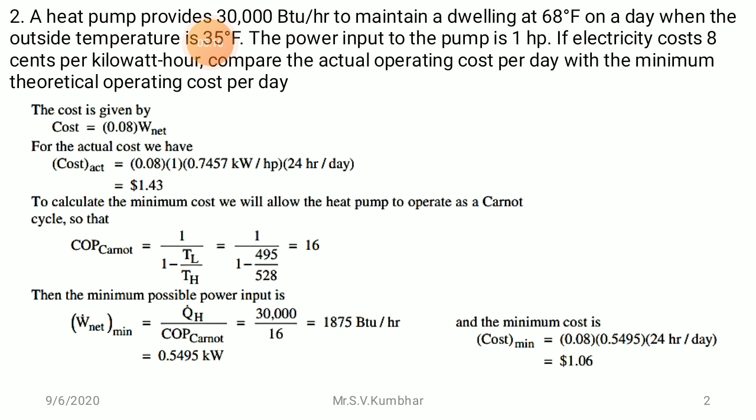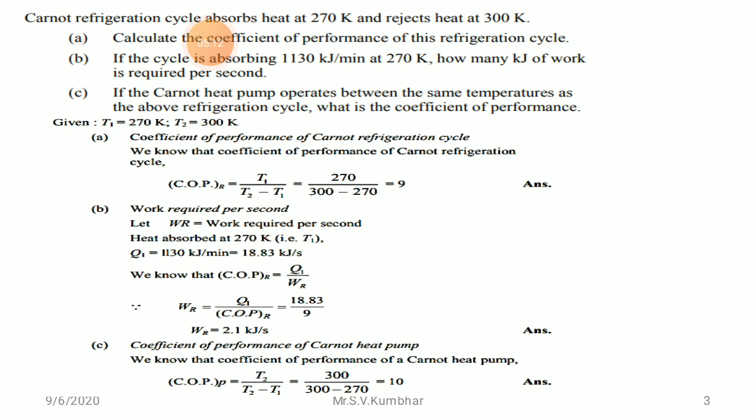In this way we solve numericals based on heat pump. Next question: a Carnot refrigeration cycle absorbs heat at 270 K and rejects heat at 300 K. Question one: calculate the coefficient of performance of the refrigeration cycle. Question two: if the cycle is absorbing 1,130 kJ per minute at 270 K,